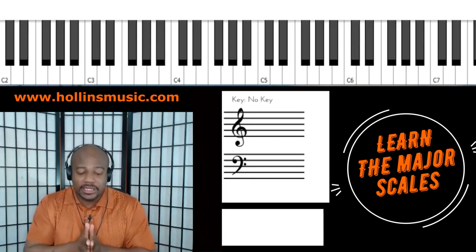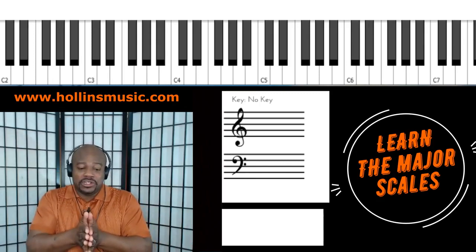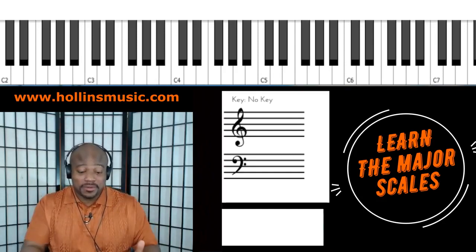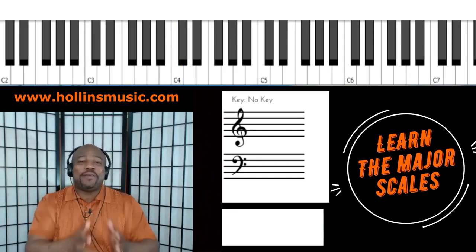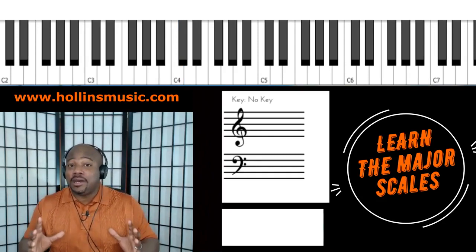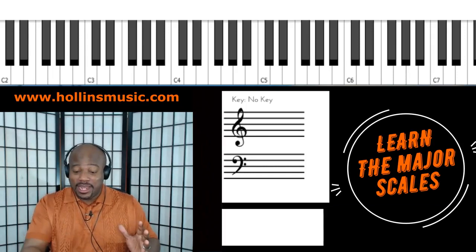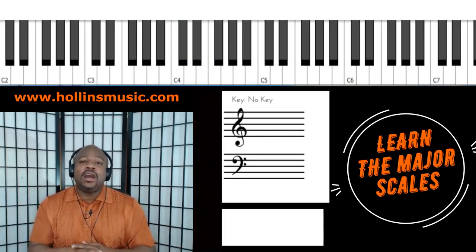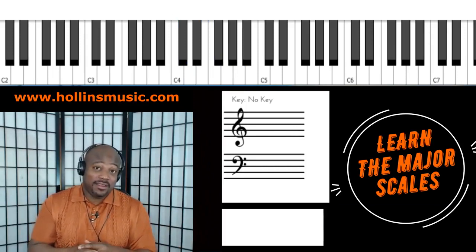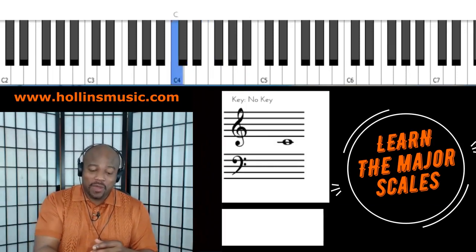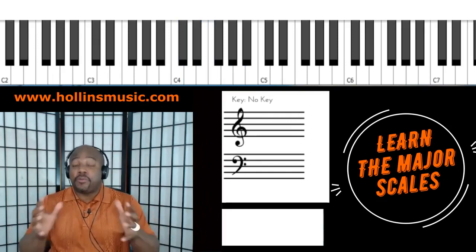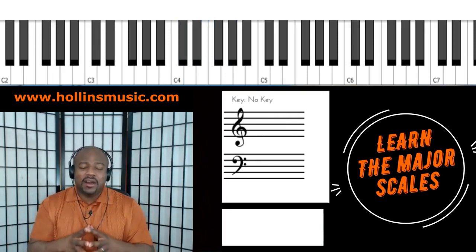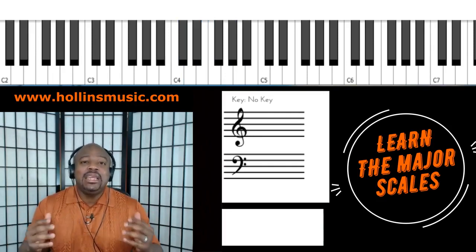Let's try this. In the key of C major, what note is number two? That's D — easy. What note is number six? That's A — one, two, three, four, five, six. Still in the key of C, what note is number seven? B — one, two, three, four, five, six, seven. Most of you probably got that completely right. Now let's look at some different keys.